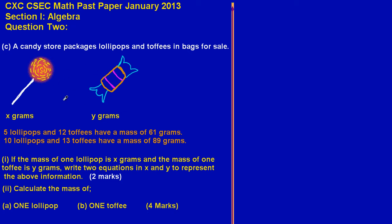X represents the grams for lollipops and Y grams for the toffees. They gave us some very important notes: 5 lollipops and 12 toffees have a mass of 61 grams, and 10 lollipops and 13 toffees have a mass of 89 grams.